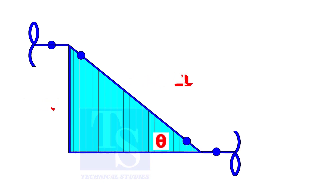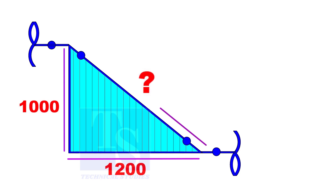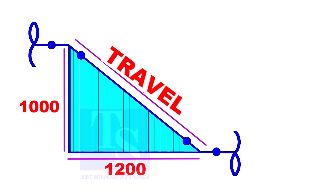In an isometric drawing, usually the set and the run dimensions are given. Assume that the set is 1000mm and the run is 1200mm — how do we calculate the travel length?